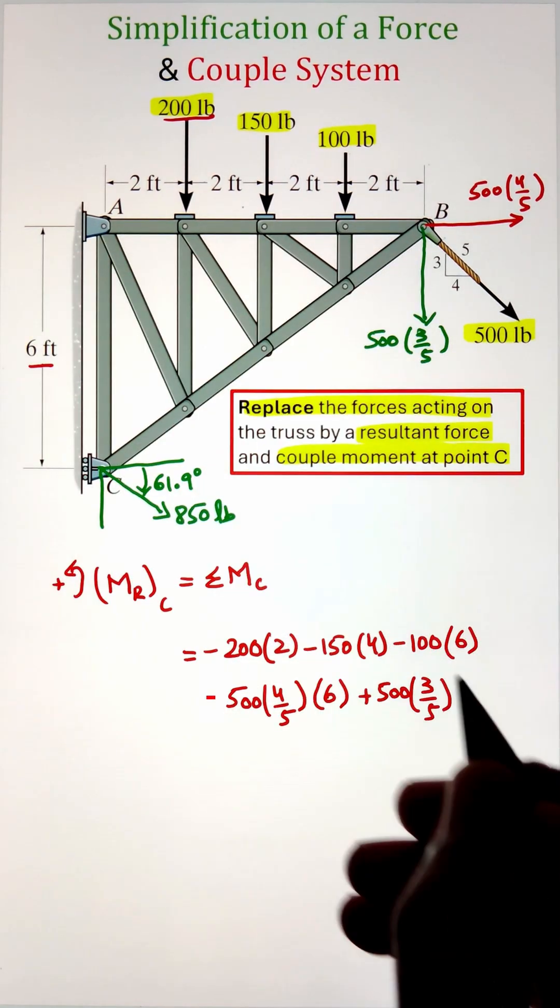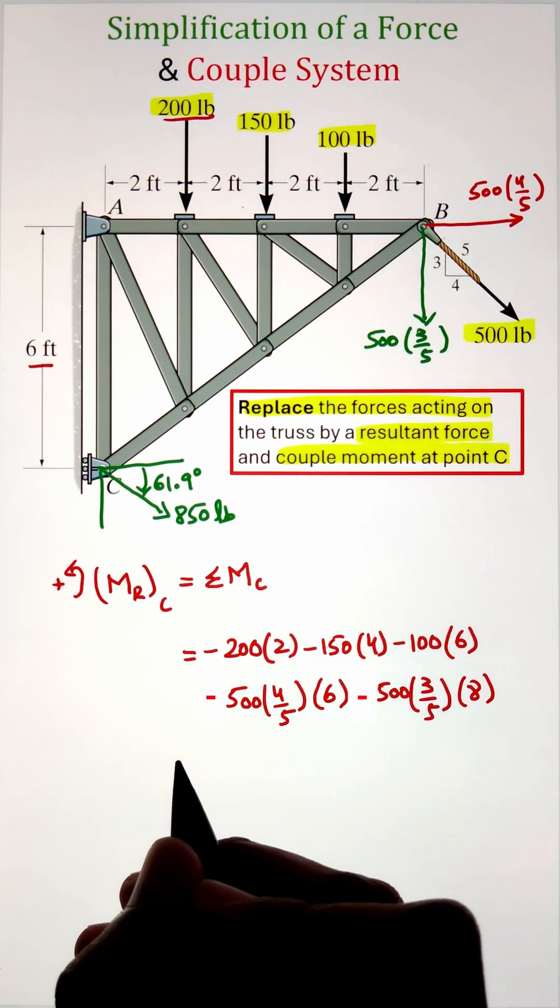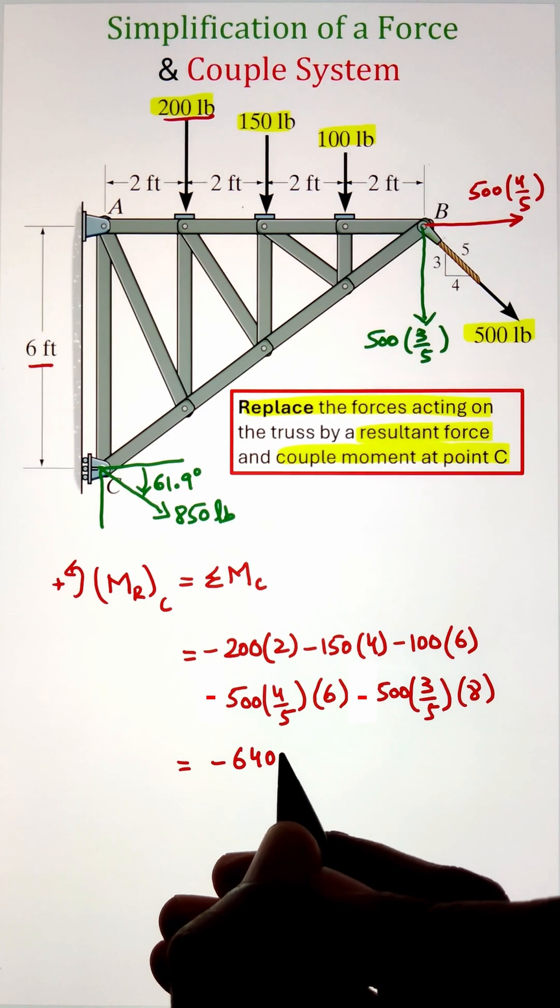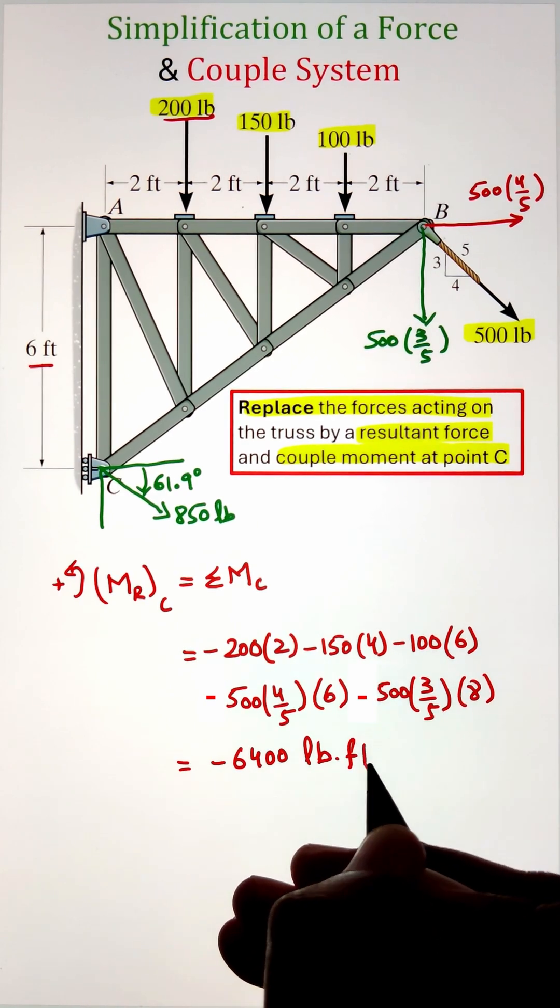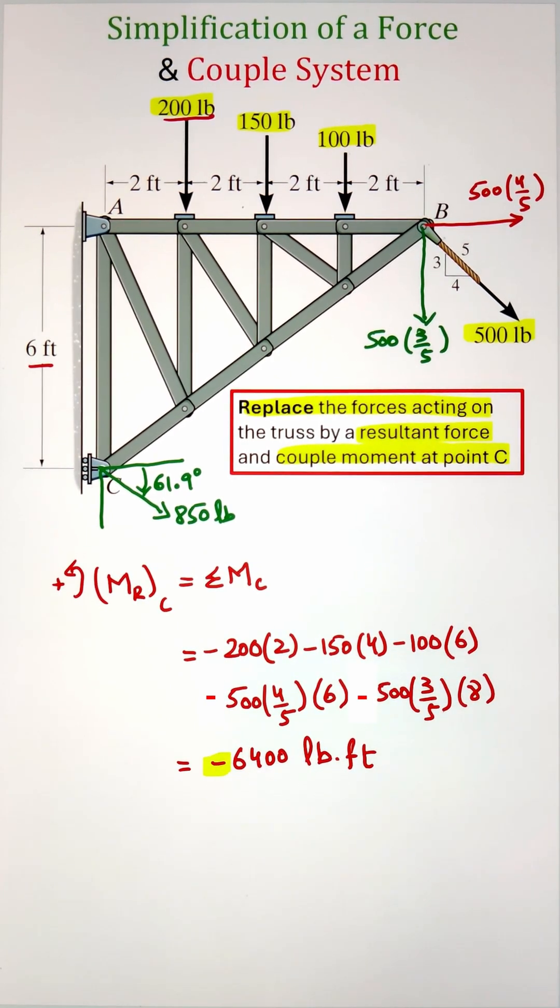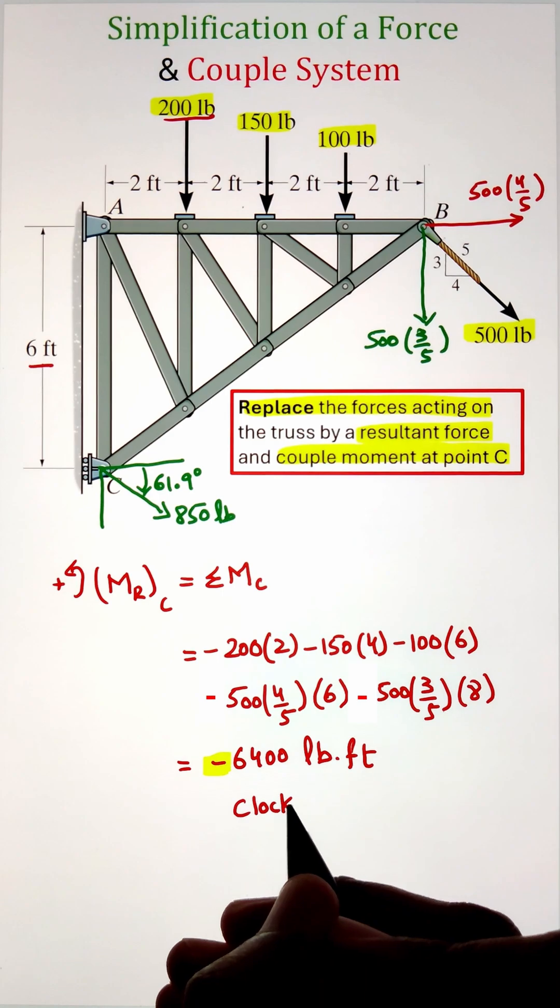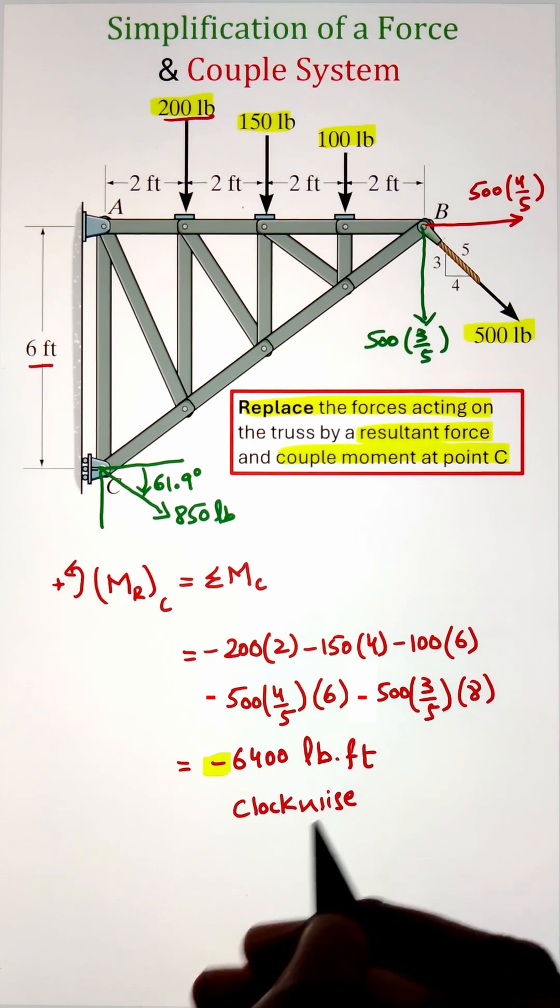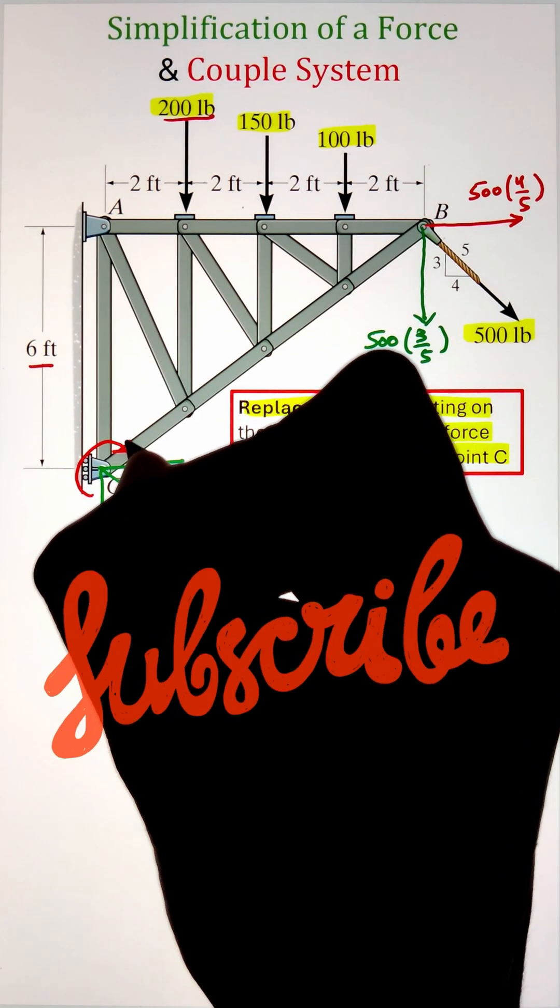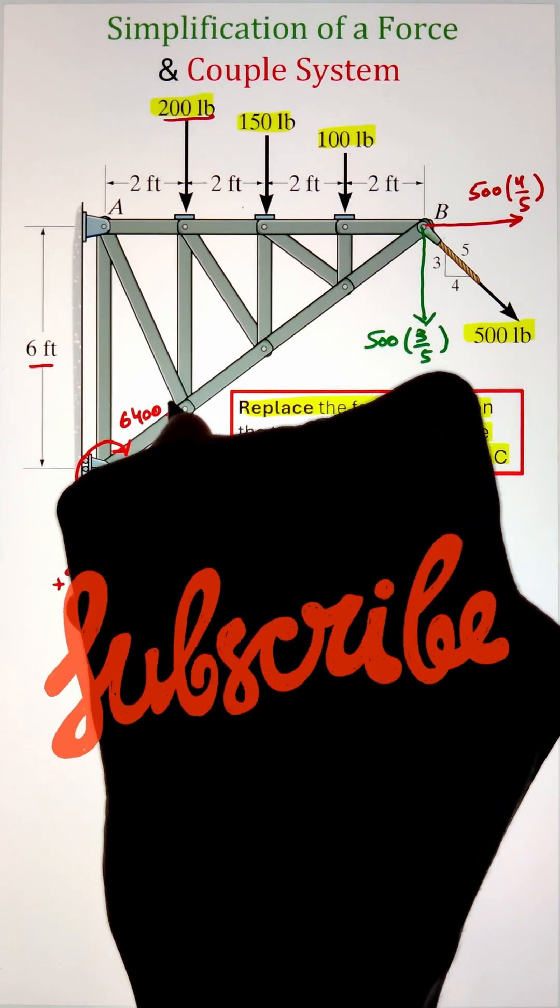Finally we have our 500 times 3 over 5 force that has a moment arm of 8 feet. Again this is going to make a clockwise moment. So adding them all together we get our final value of negative 6400 pound feet. The negative sign indicates that the moment is in clockwise direction.